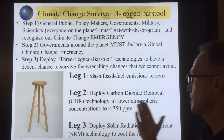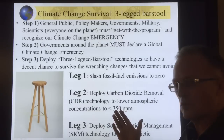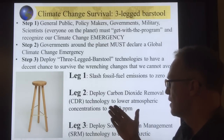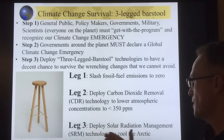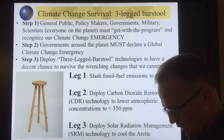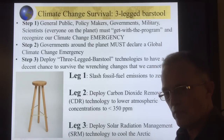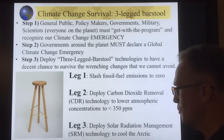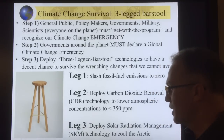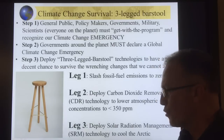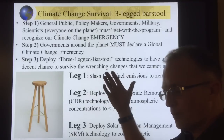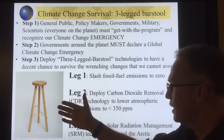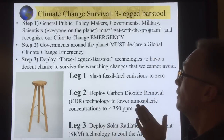Then we deploy the three-legged barstool technologies. Leg one: slash fossil fuel emissions to zero — no more fossil fuel subsidies, implement carbon taxes. Leg two: deploy carbon dioxide removal technology to lower atmospheric concentrations — we have to bring CO2 down to 350 ppm or below to save ocean life. Leg three: deploy solar radiation management (SRM) technologies to cool the Arctic — otherwise Greenland will lose massive ice chunks, sea levels will rise abruptly, and the jet stream will completely reorganize.